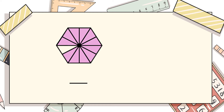Therefore our denominator will be equal to the total parts, which is 12. The colored parts are 1, 2, 3, 4, 5, 6, 7, 8, 9, 10, 11. Therefore our numerator will be equal to the colored parts. Hence the numerator is 11 and the denominator is 12.